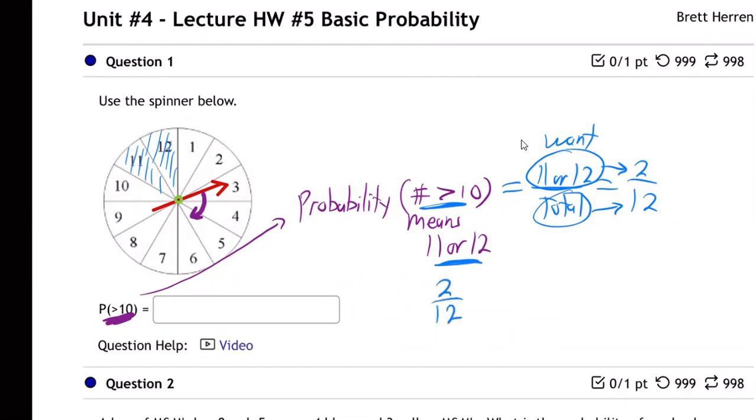It'll take it either way. So if you take two twelfths and you divide top and bottom by two, that'll be one sixth.